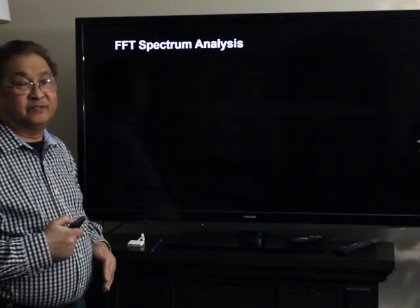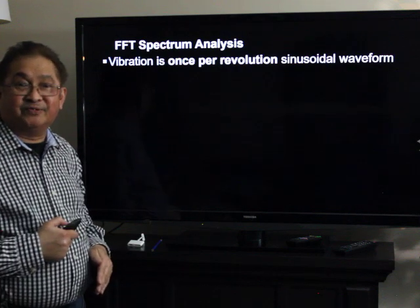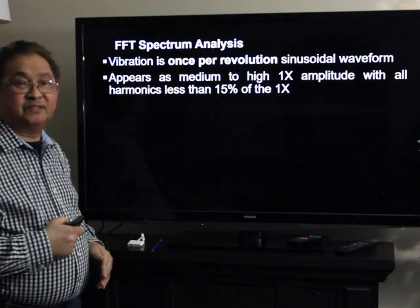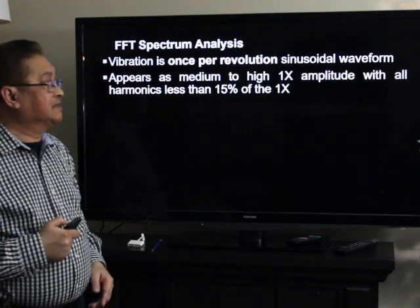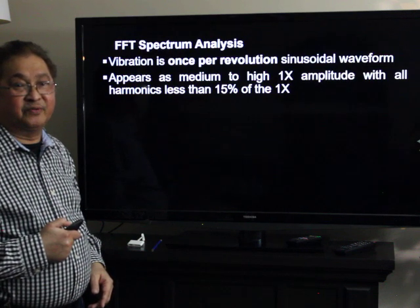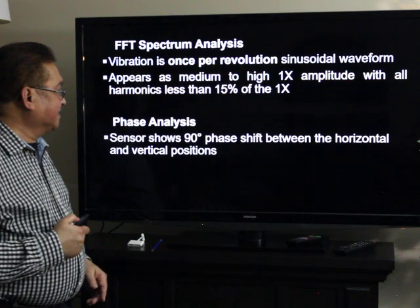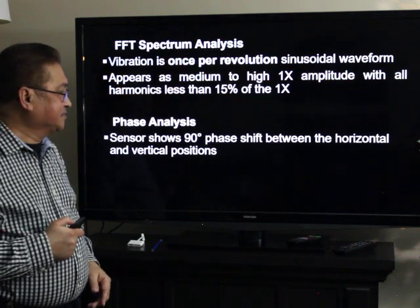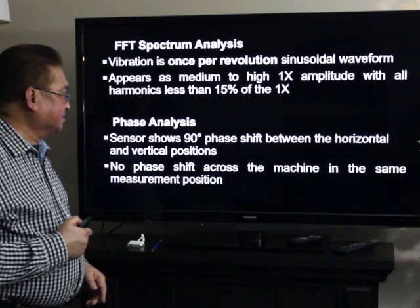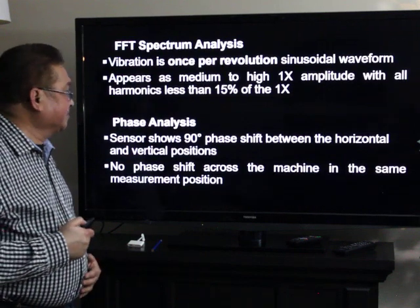In FFT spectrum analysis, vibration is once per revolution, sinusoidal in waveform, and appears as a medium to high 1X amplitude with all harmonics below 15%. For phase analysis, the sensor shows a 90-degree phase shift between the horizontal and vertical positions, and there is no phase shift across the machine in the same measurement position.